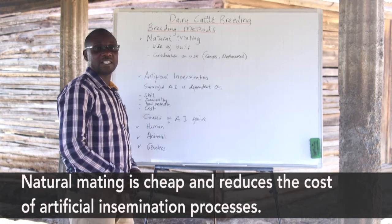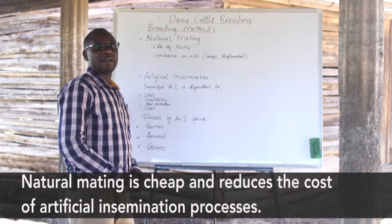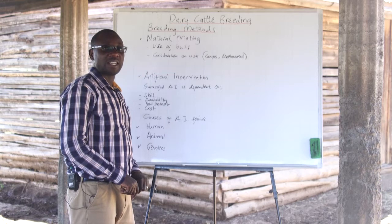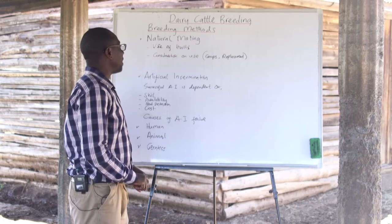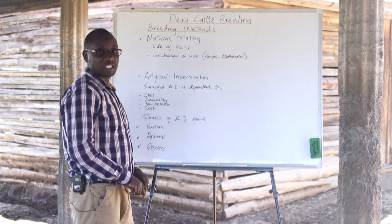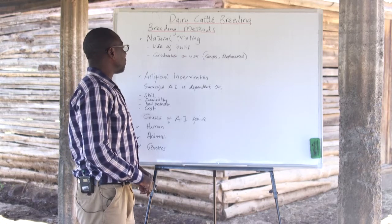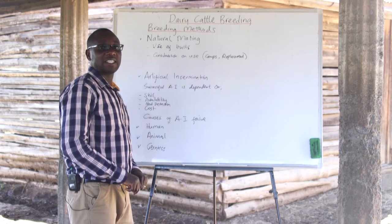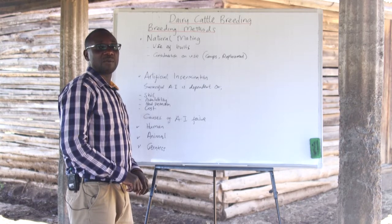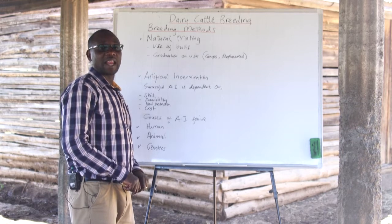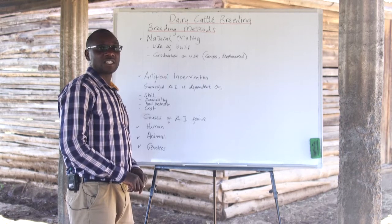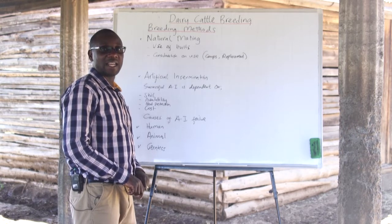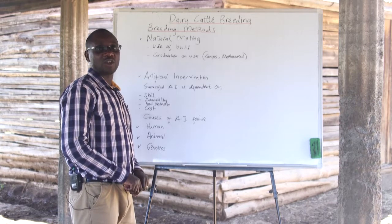Farmers would need to consider natural mating if they are not able to afford artificial insemination. However, the use of bulls, while effective and relied upon by smallholder farmers, is not the recommended way of breeding in modern animal breeding, for a number of reasons.